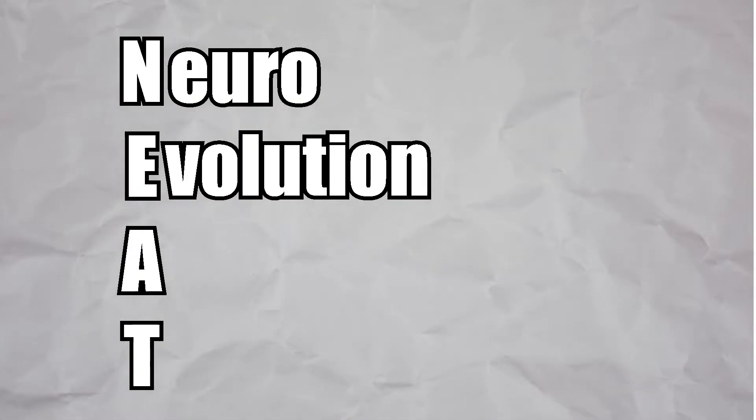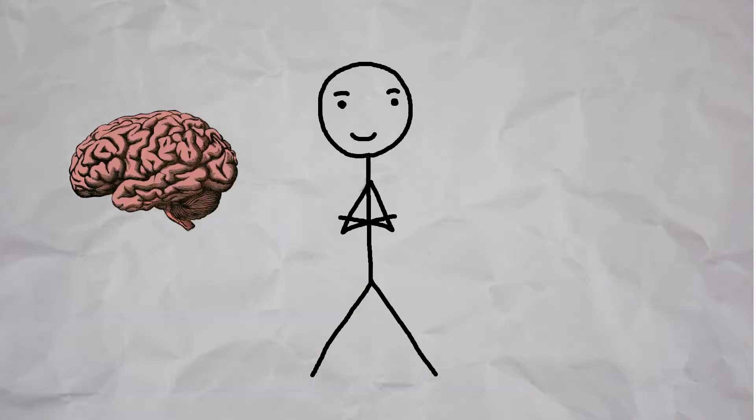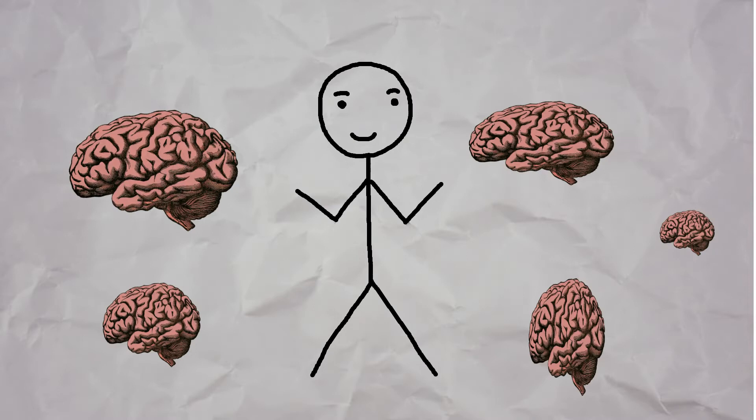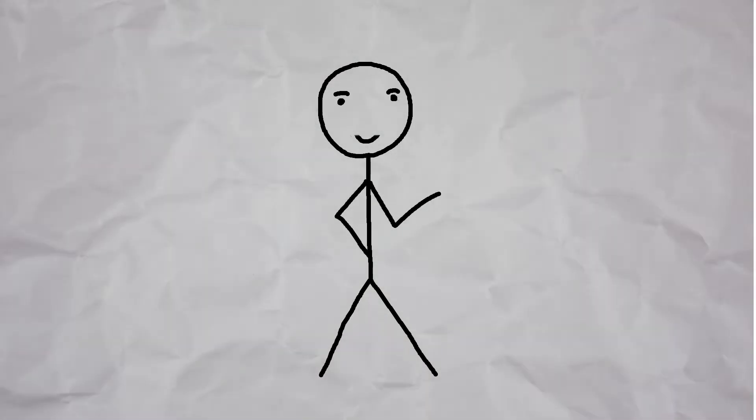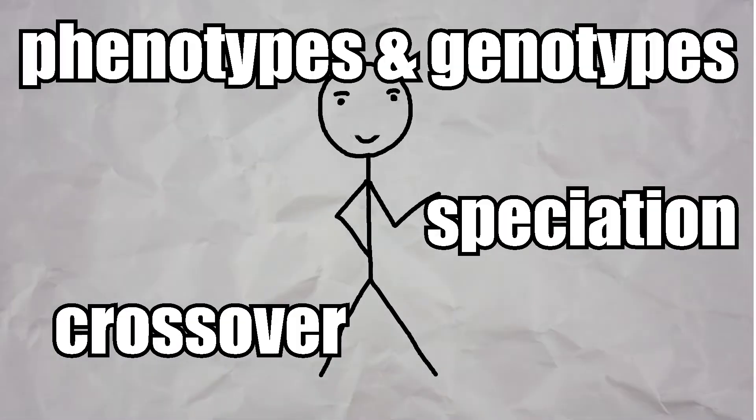Our boost is called NEAT, which stands for Neuro Evolution of Augmented Topologies. If you don't understand what that means, same. Basically, instead of creating one type of brain as we did earlier, NEAT makes different shapes and sizes of brains and chooses the best shape based on evolution. It also adds cool concepts from biology like phenotypes and genotypes, crossovers, speciation, and niches.